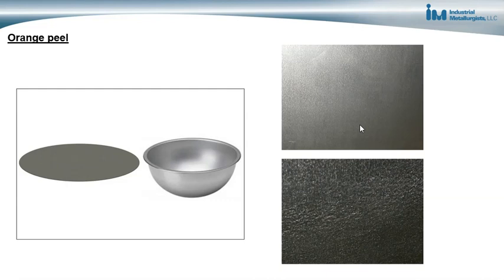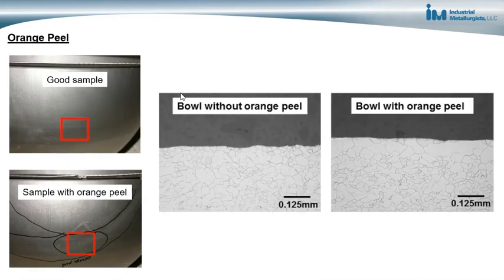This intermittent problem had been going on for several years, and this was a mature manufacturing process — not a new one. We wanted to understand the cause of the orange peel, determine the root cause, and put things in place to prevent it from occurring again.